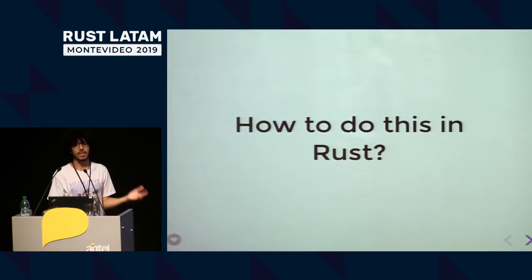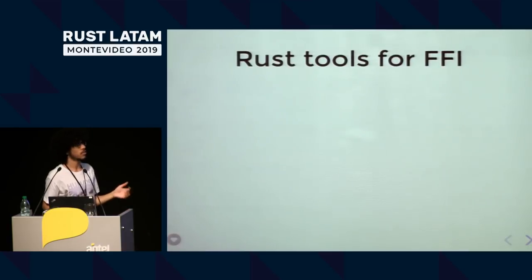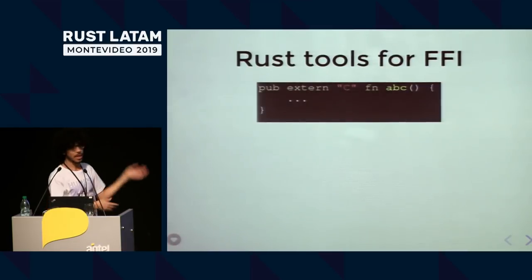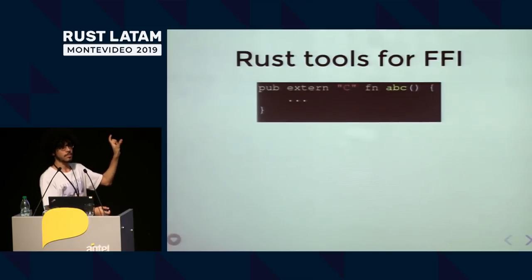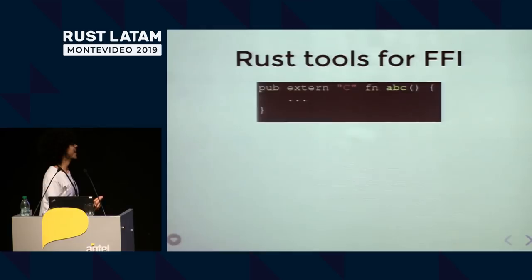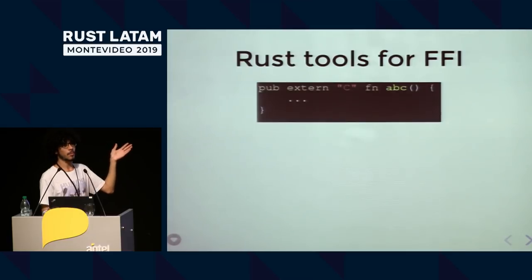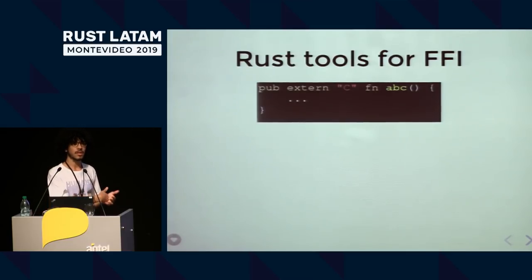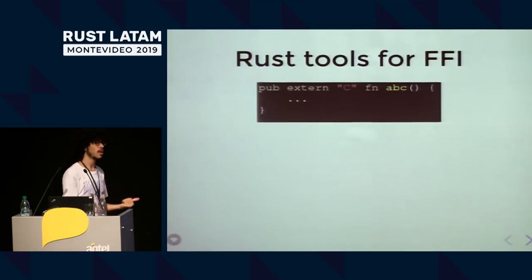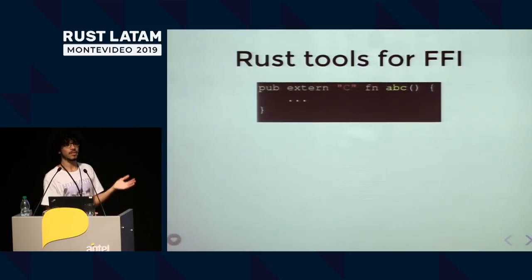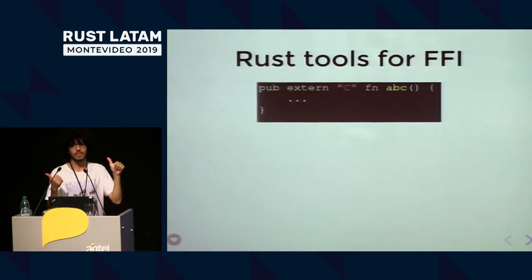But how do you do this in Rust? Rust has various features and tools to do this. One of them is the extern function declaration. When you put the `extern` keyword before a function declaration, it basically means you want to use it externally. The `"C"` ABI means you're using the C calling convention. Most languages have a way to talk with C, so when you externalize using the C way, they can read your Rust library. It's pretty easy to use.